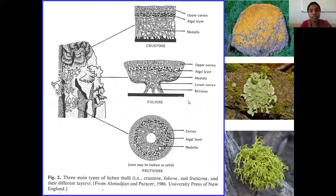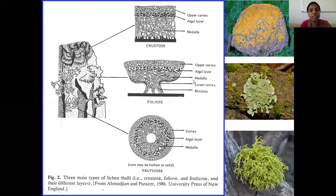The second type is foliose lichen. Foliose lichen is a highly lobed structure — it has both an upper cortex and a lower cortex, which are made up of profusely branched fungal hyphae. In between it has the medullary region where the algal members are trapped inside the hyphae, and it also has rhizines.